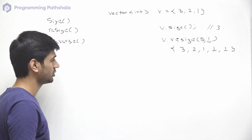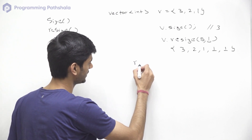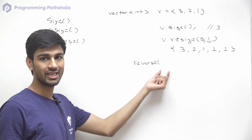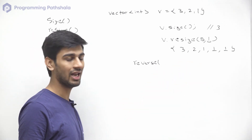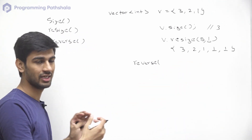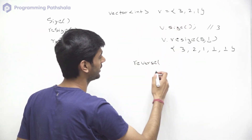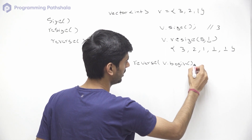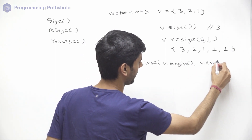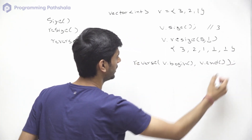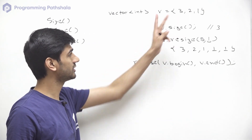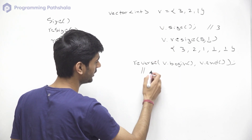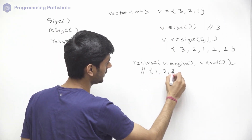Now let's talk about reverse. In reverse, we have to pass two arguments: a pointer to the starting element and a pointer to the last element we want to reverse. If we want to reverse the entire vector, we use v.begin() and v.end(). This will reverse the entire vector, so our vector would look something like this: 1, 2, 3.